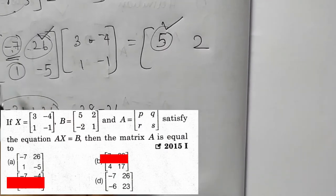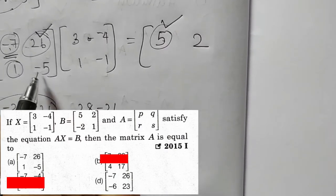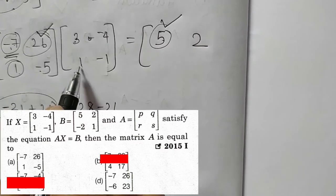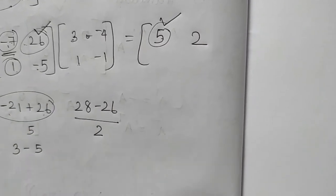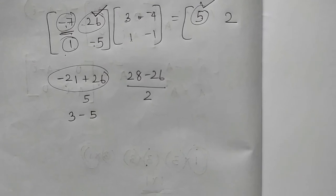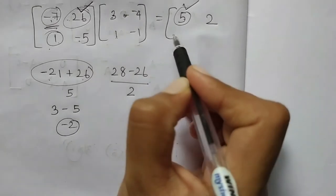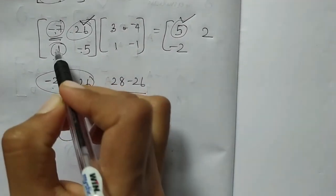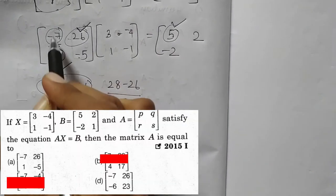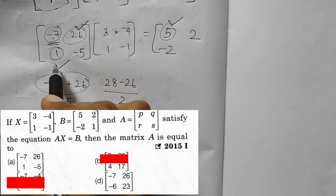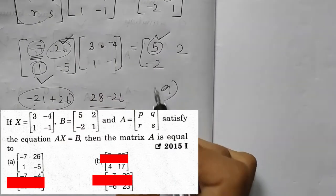For the third element: 1 times 3 equals 3, minus 5 times 1 equals minus 5, so 3 minus 5 equals minus 2. Adding minus 2 means option A is the right answer.